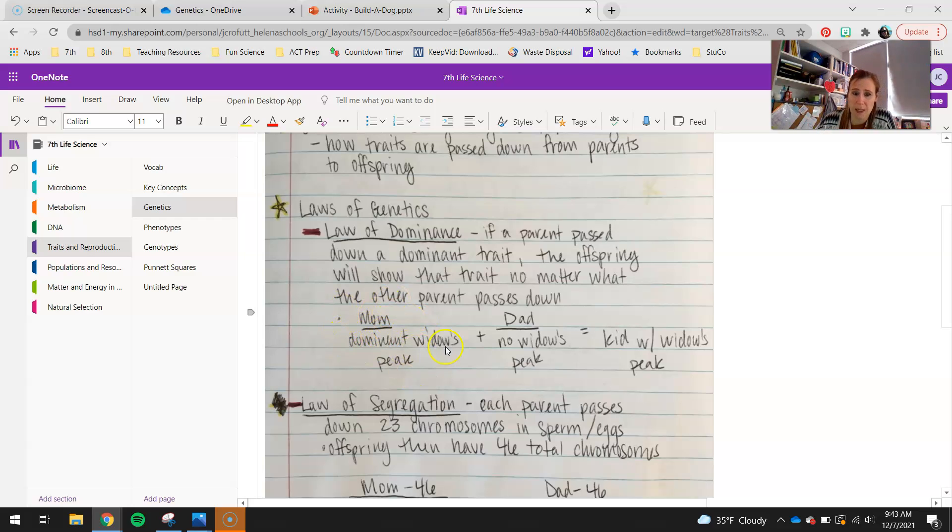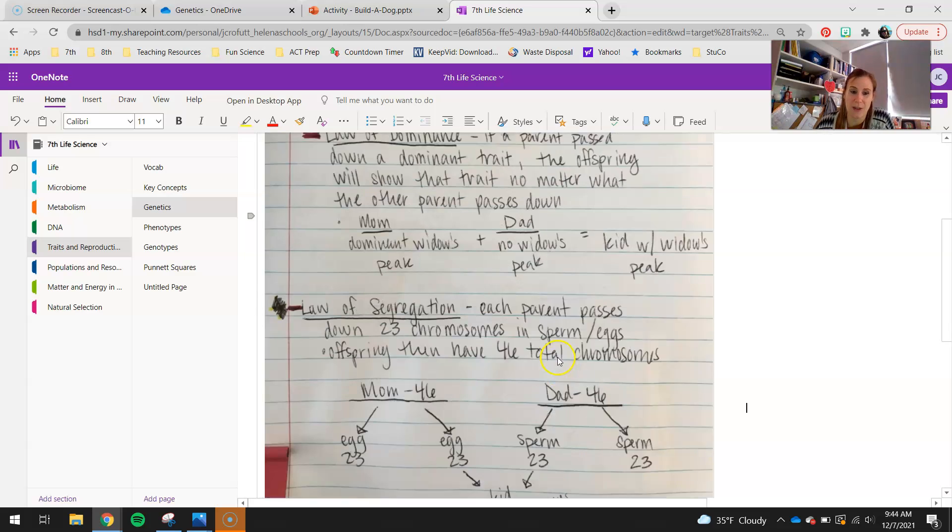So, mother passes down the widow's peak, which is dominant. Dad passes down a trait for no widow's peak, but the kid then is going to have the widow's peak because that dominant trait shows up over the recessive.